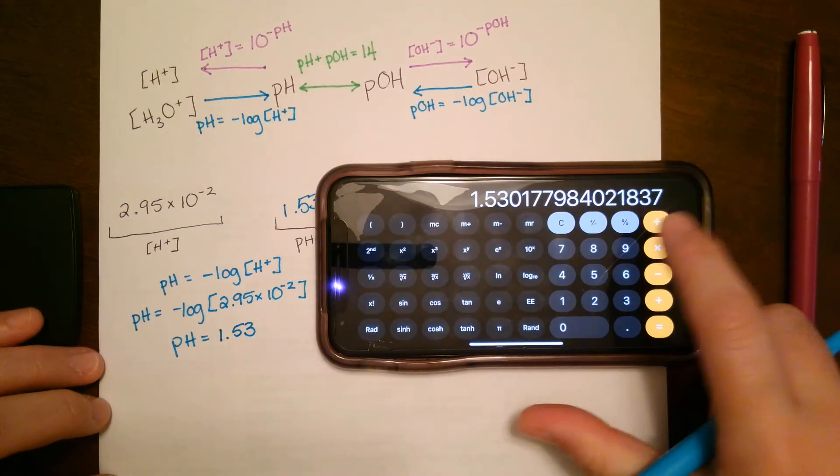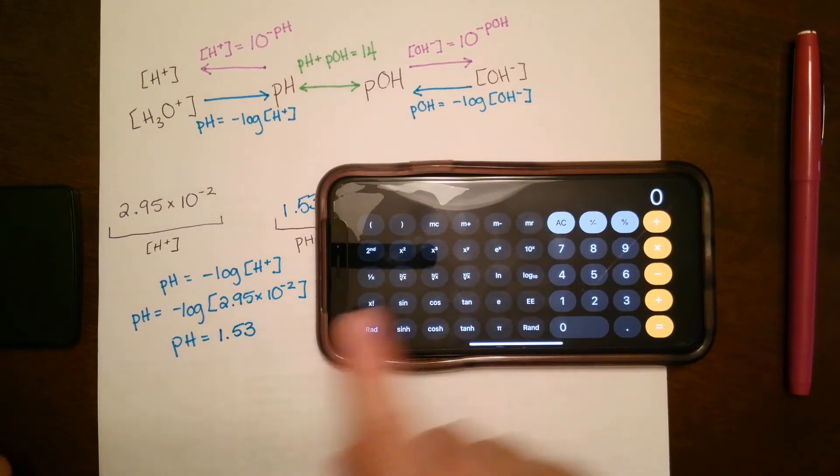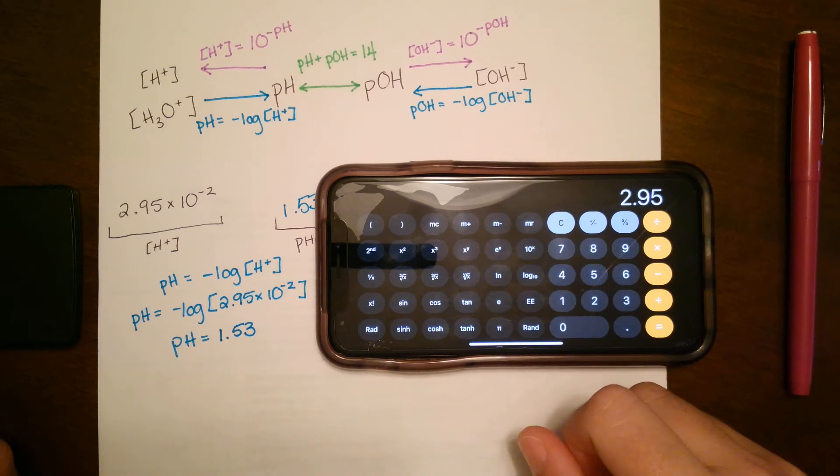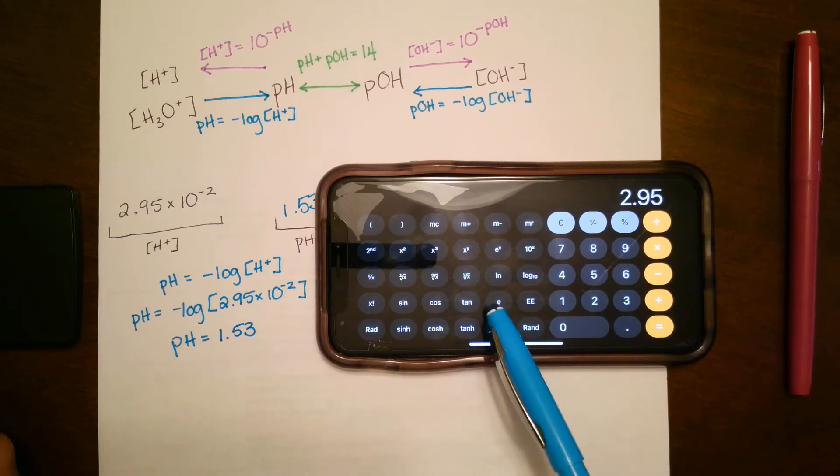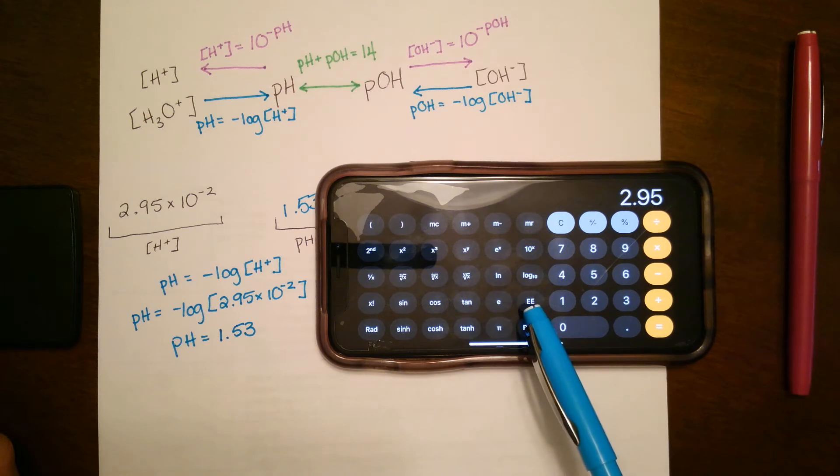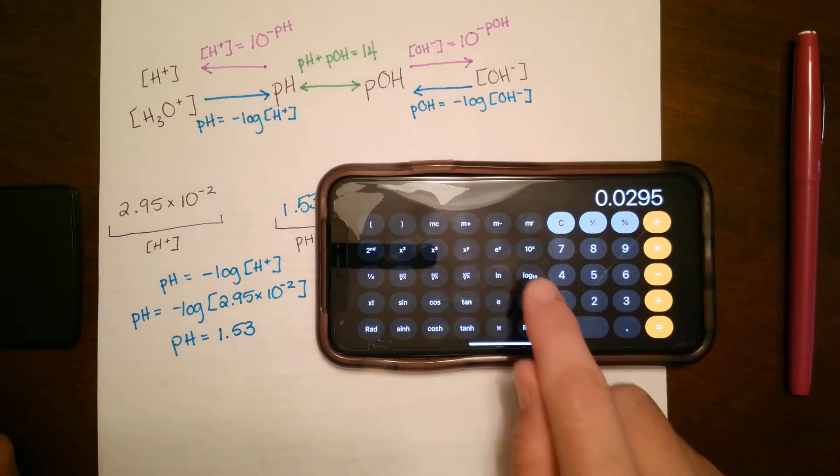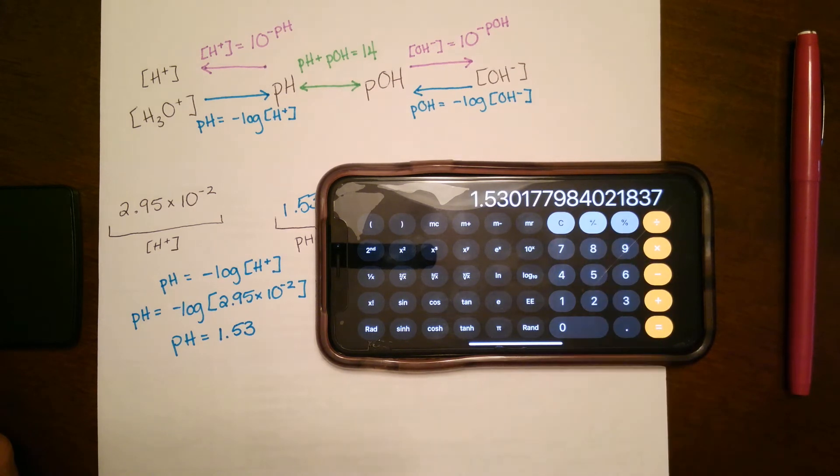So I'll do that one more time so you can see it. So again, we're going to type in this exponent first. So we're going to say 2.95. Instead of times 10 to the, there's an E button and there's an EE. We want that double E or that times 10 to the. 2 negative. Enter. And then you're going to press that log base 10 right there. And then negative. So that is negative log of 2.95 times 10 to the negative 2, which is 1.53.